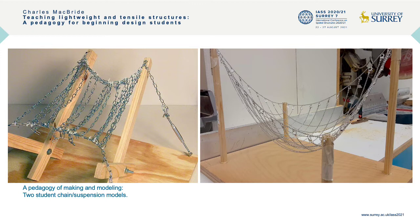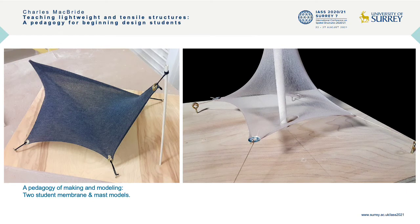These examples show the first modeling assignment where student pairs assemble rudimentary chain suspension models. This is often their introduction to the wood shop and to modeling materials other than craftsmanship board and bass wood. Notice the struggle with material scale and connections, which ultimately improve alongside continued discussion about detailing. Basic modeling techniques and expectations of improving craftsmanship are all part of the initial modeling assignments.